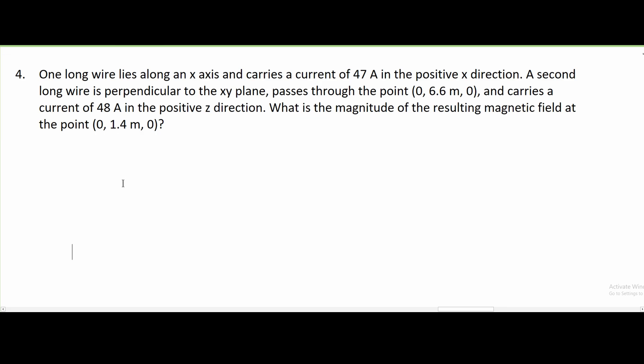For number four, we are told one long wire lies along an x-axis and carries a current of 47 amps in the positive x direction. A second long wire is perpendicular to the xy plane, passes through the point (0, 6.6 meters, 0), and carries a current of 48 amps in the positive z direction. We're asked, what is the magnitude of the resulting magnetic field at the point (0, 1.4 meters, 0)?